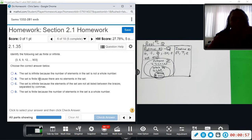B says the set is finite because there are no elements in the set. That would not be the definition of finite.